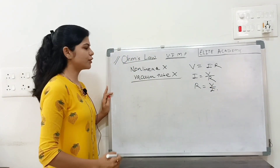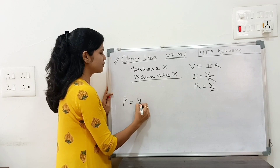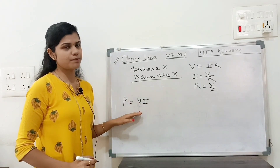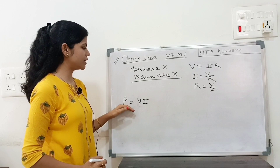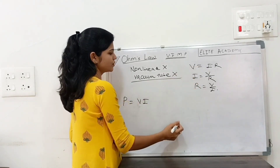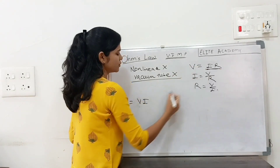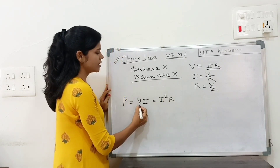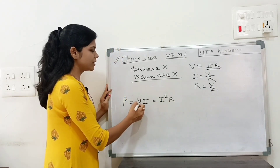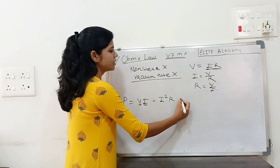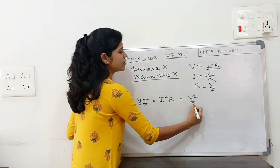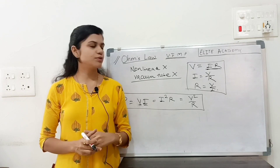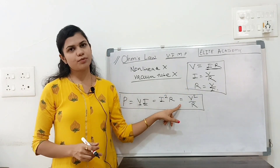What is the formula for power? Power equals VI. From Ohm's law, since V equals IR, we get P equals I²R. And substituting I equals V/R, we get P equals V² upon R. All formulas related to bulbs can be solved using these two important formulas.